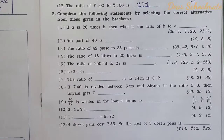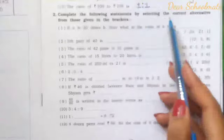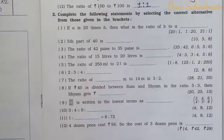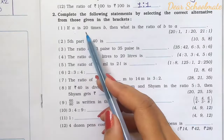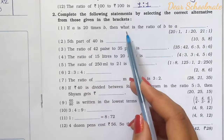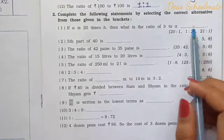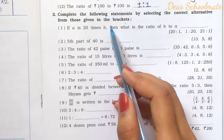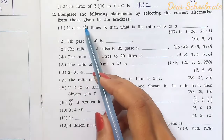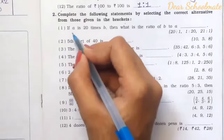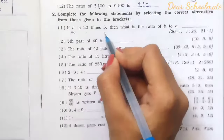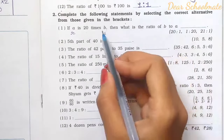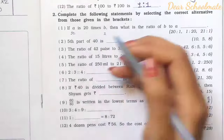Question 2: Complete the following statements by selecting the correct alternative. First: If A is 20 times B, what is the ratio of B to A? Suppose B equals 1, then A equals 20. So the ratio of B to A is 1 is to 20.